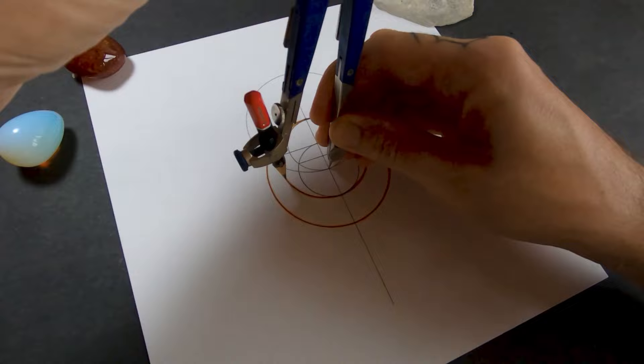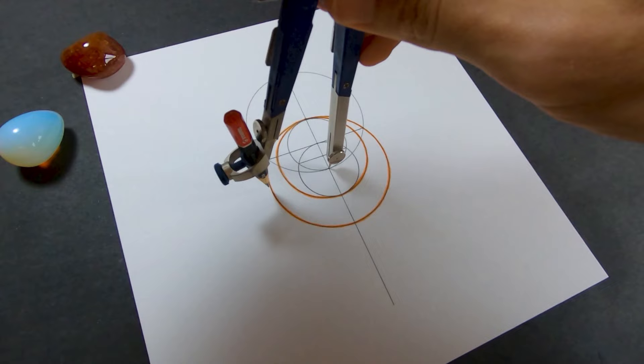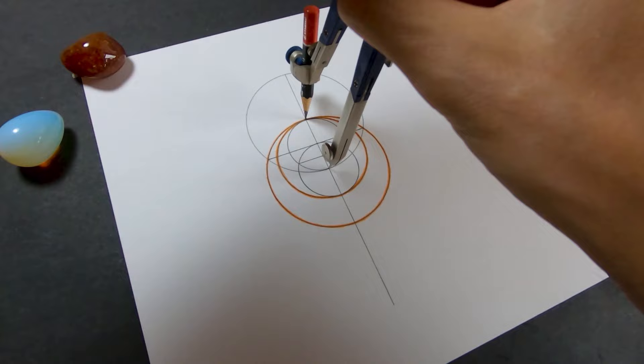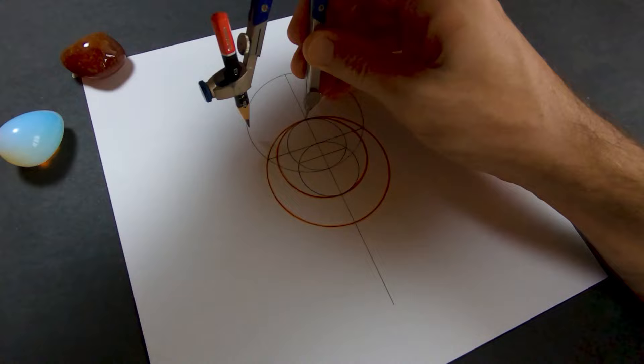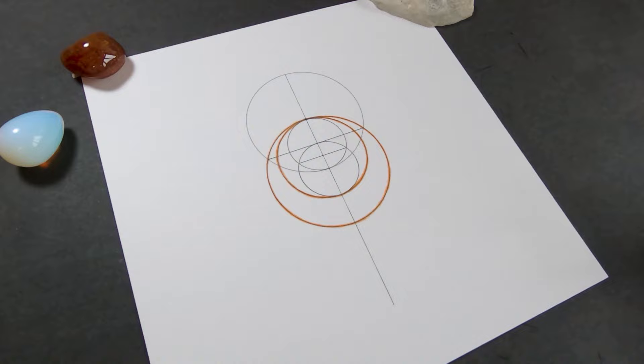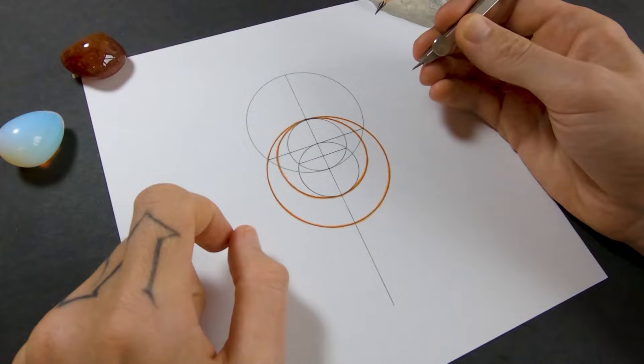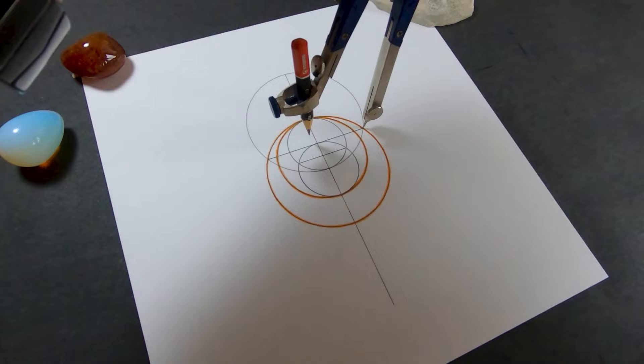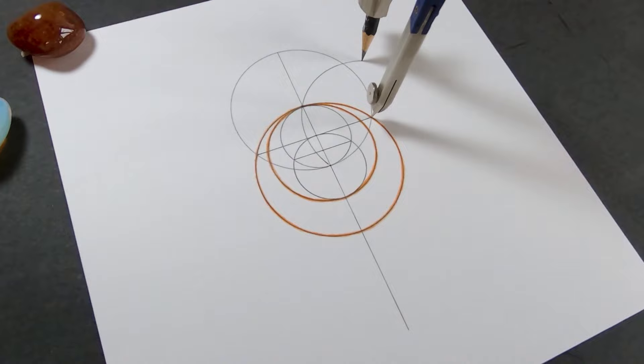All right, so now I'm going to set the compass to the size of the first circle and I'm going to draw the seed of life. So the seed of life is six circles around the center circle. I'll use this intersection here where the two circles cross and draw a circle. And then move down to the next intersection where the circles cross and draw another circle, and so on until we've got six circles around the center circle.